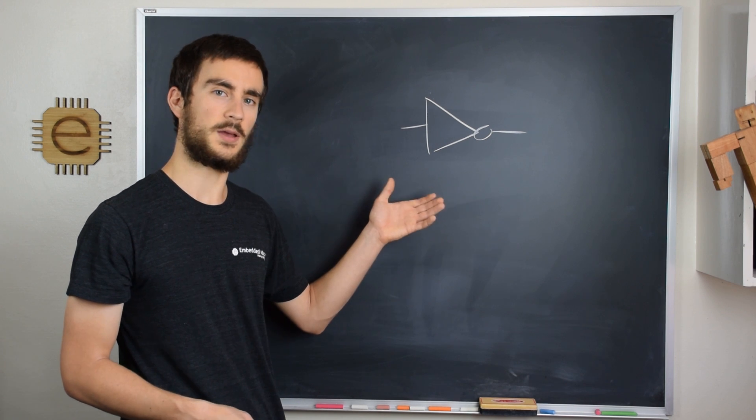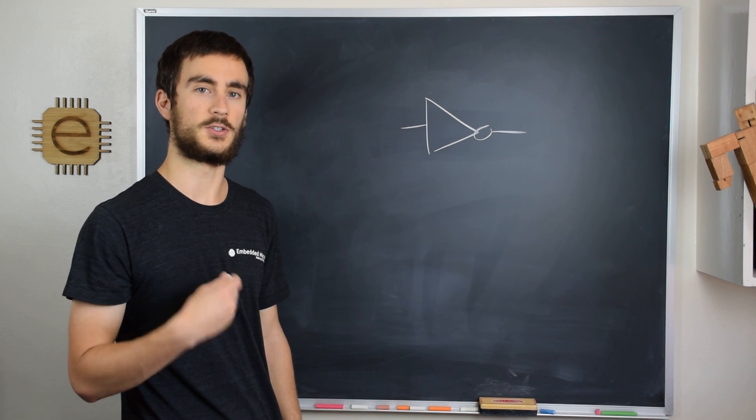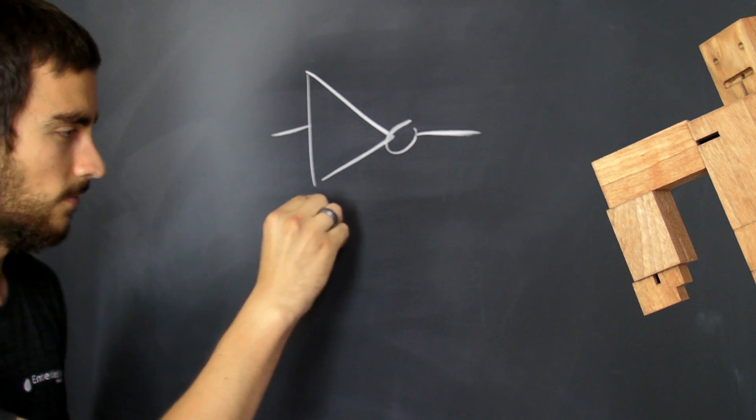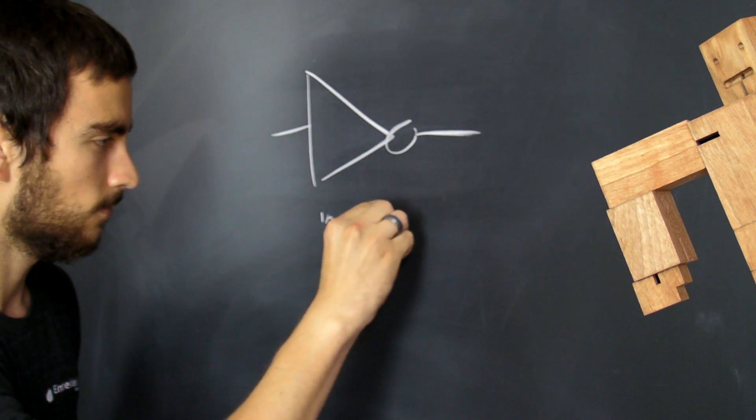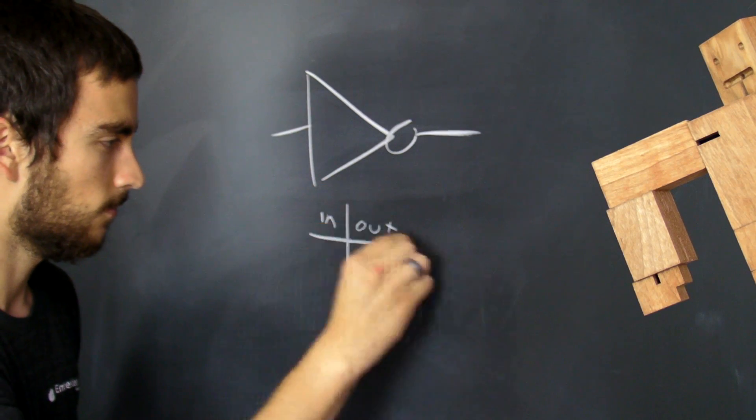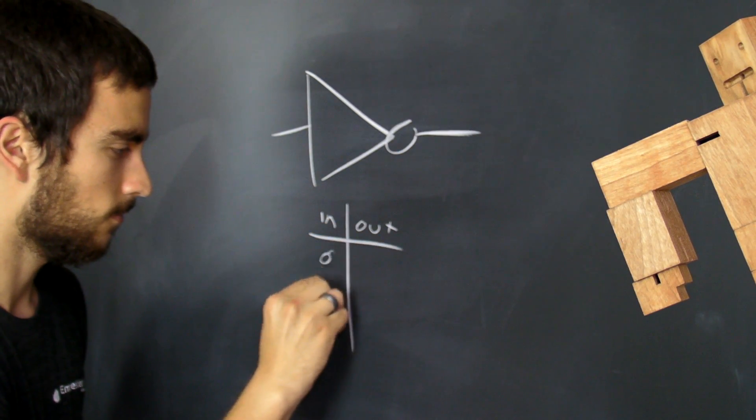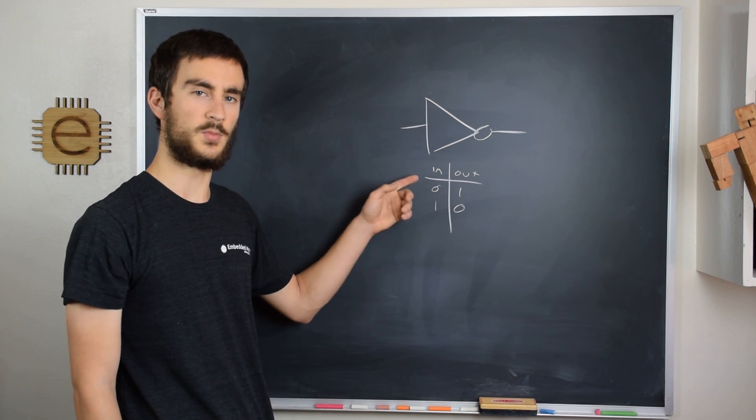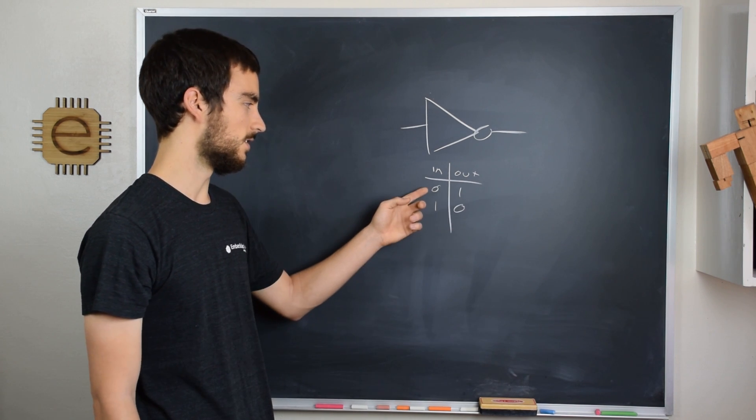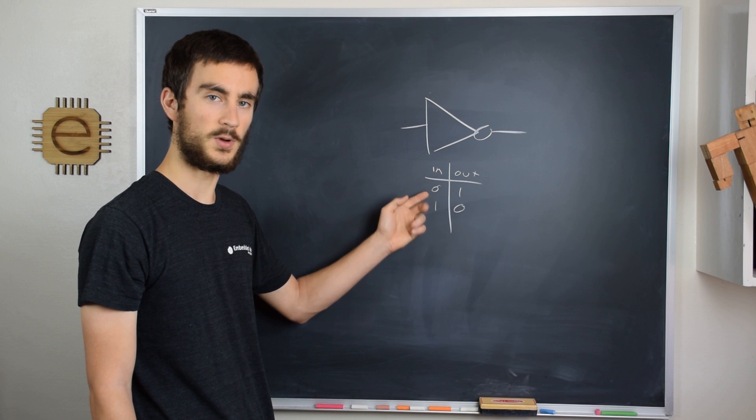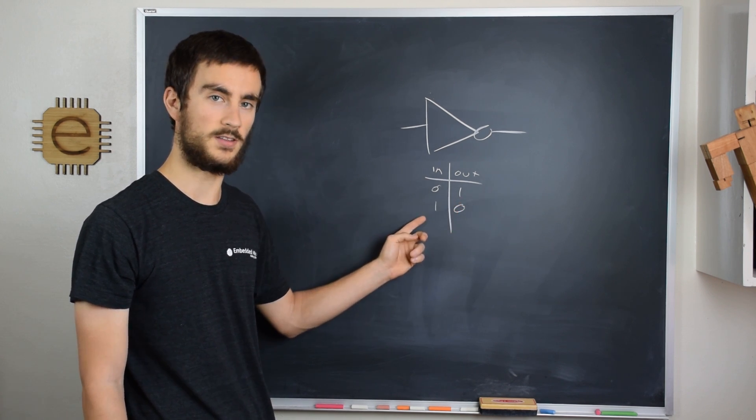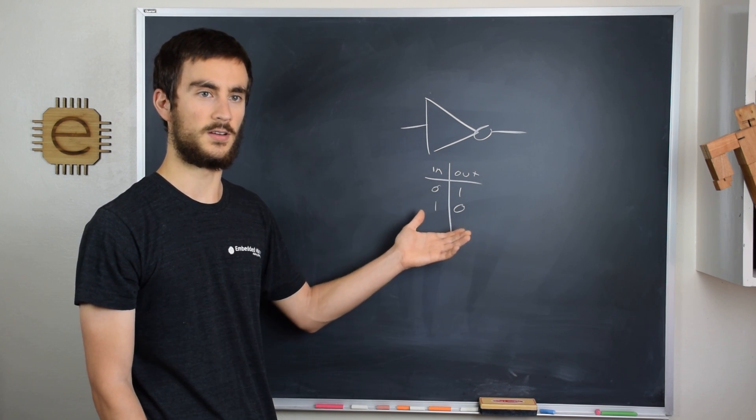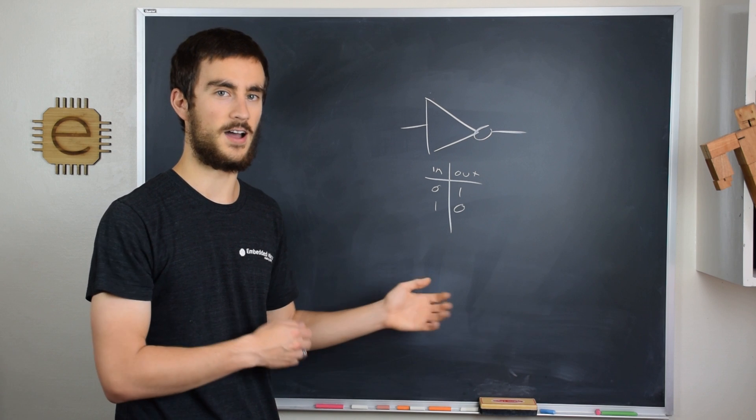To understand how this gate works, it sometimes helps to draw something that's known as a truth table. The truth table for a NOT gate looks like this. This just correlates the inputs to the outputs. So you can see if you apply a 0 to the input, you get a 1 at the output. If you apply a 1 to the input, you get a 0 at the output. So it simply inverts the input to the output. In other words, the output is not the input.